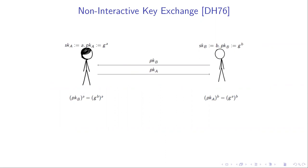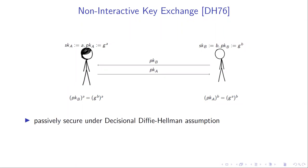Non-interactive key exchange: Alice and Bob exchange public keys, and at some point they can compute a shared key without any further interaction. In the Diffie-Hellmann key exchange the shared key is g^{AB}. This scheme is secure under the decisional Diffie-Hellmann assumption, which states that given g^A, g^B, and g^{AB}, this is computationally indistinguishable from g^A, g^B, and g^U, for A, B, U uniform random from Z_p where p is the prime order of the group.